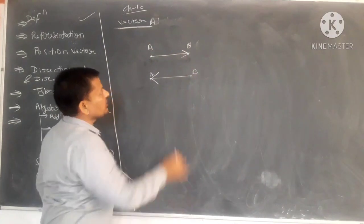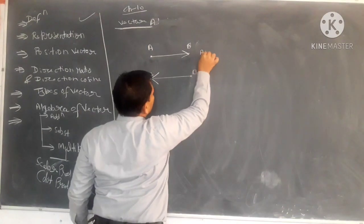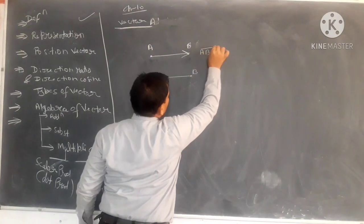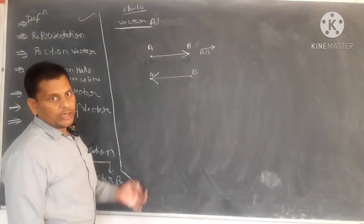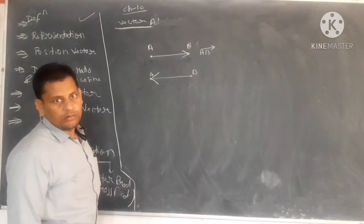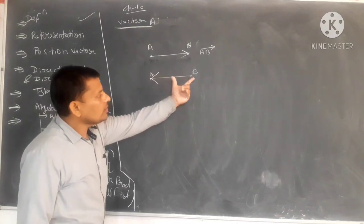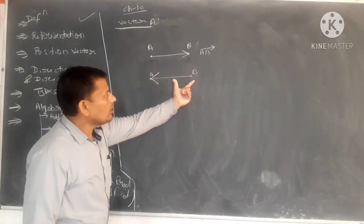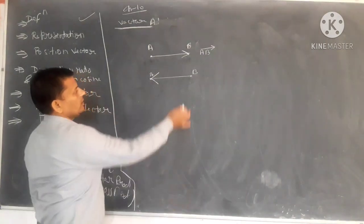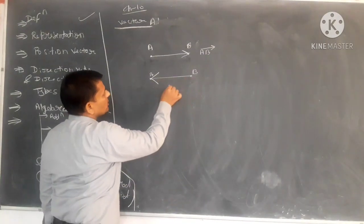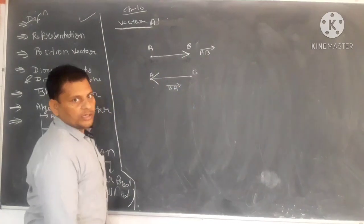If the arrow points from B to A, it means we are joining from point B to A. The direction of the arrow tells us the direction of travel. So to write vector from A to B, we write AB with an arrow on top — that is the representation: vector AB. The point from which you join comes first. For B to A, you write BA. Is it clear?